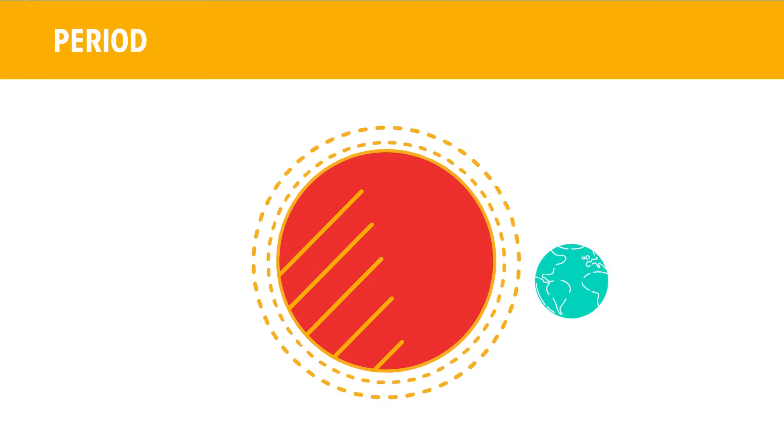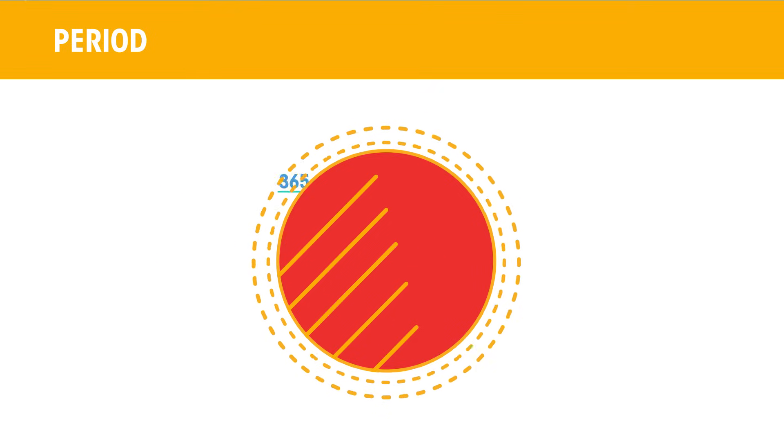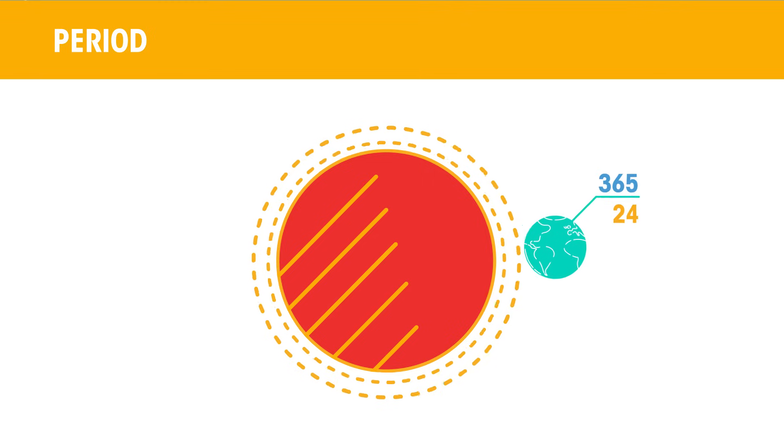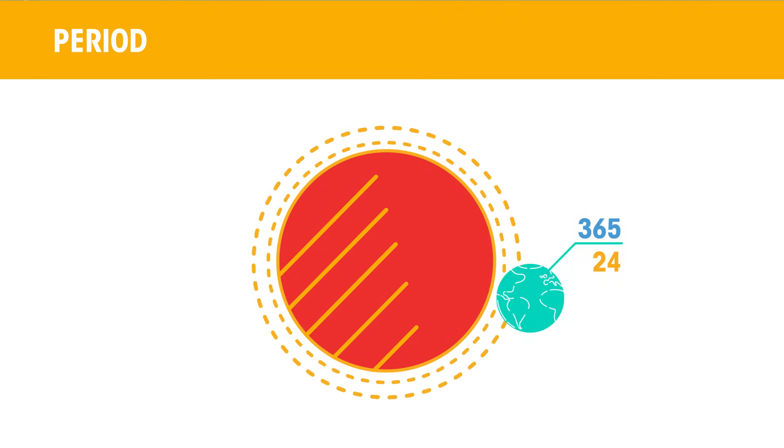When something happens repeatedly, we say that the event is periodic, and refer to the time for the event to repeat itself. The period of the Earth to orbit the Sun is 365 days. The period of a day is 24 hours. The period of a typical class at school is 45 minutes.